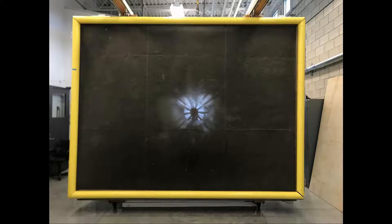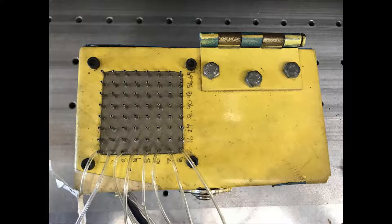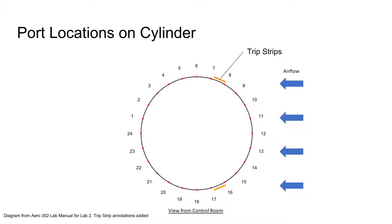The cylinder had 24 pressure ports drilled into it, and each of the pressure ports was connected to a scanning valve by routing the tubes internally. Fan speed is controlled by adjusting a variable frequency drive from the control room. We've also included a diagram of both the port and trip strip location on the cylinder, in relation to airflow.